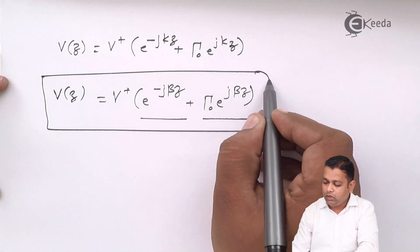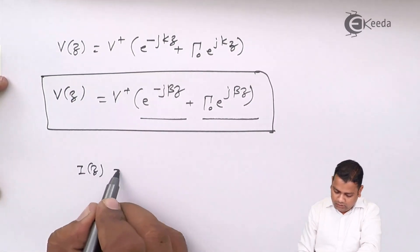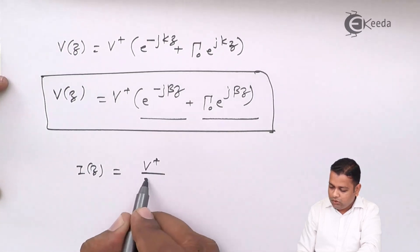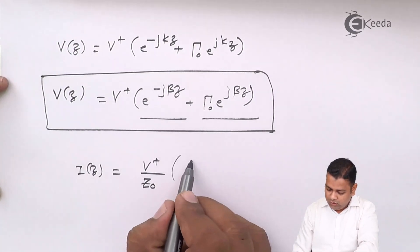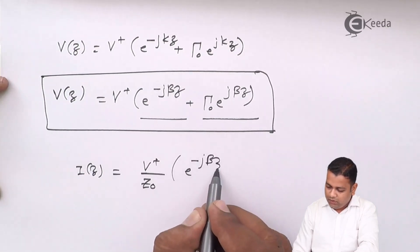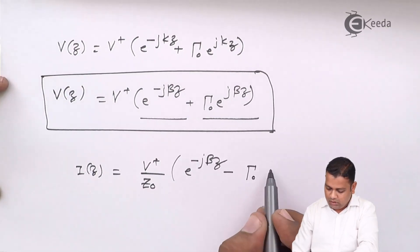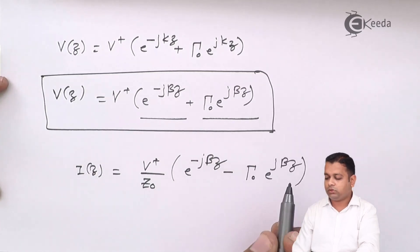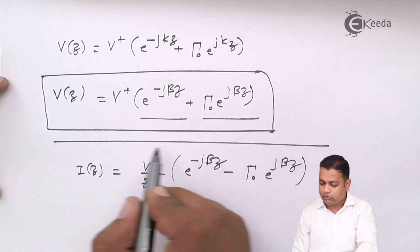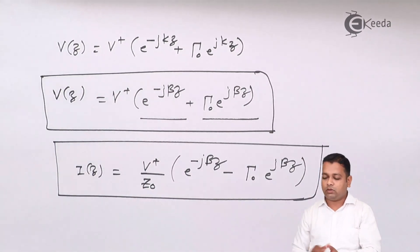The corresponding current equation is I(z) = (V⁺/Z0) · [e^(−jβz) − Γ₀·e^(+jβz)]. Here also the attenuation constant is zero for the lossless condition. These are the two modified equations of voltage and current for the lossless transmission line.